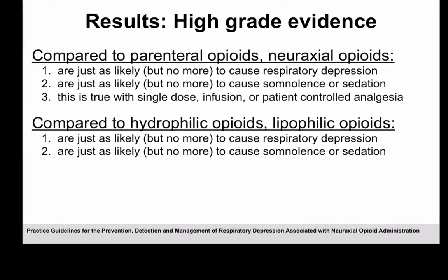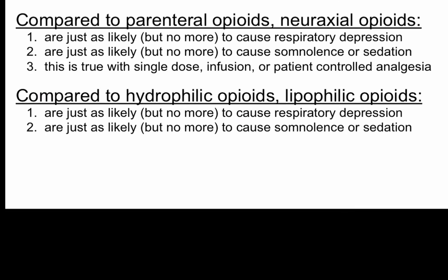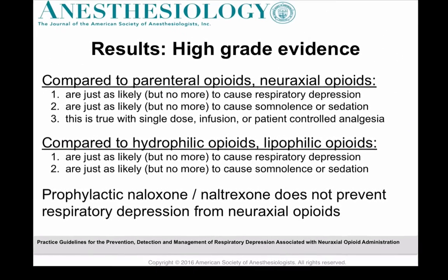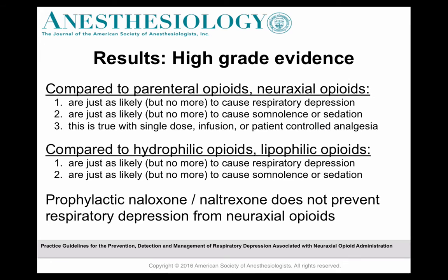The second area with high-grade evidence is when comparing hydrophilic opioids like morphine with lipophilic opioids like fentanyl — they are just as likely, but no more likely, to cause respiratory depression, somnolence, and sedation. There is also high-grade evidence supporting the notion that prophylactic naloxone and naltrexone do not prevent respiratory depression from subsequent administration of neuraxial opioids.